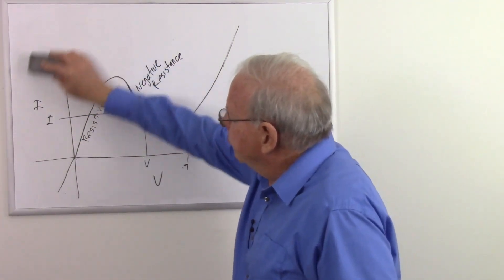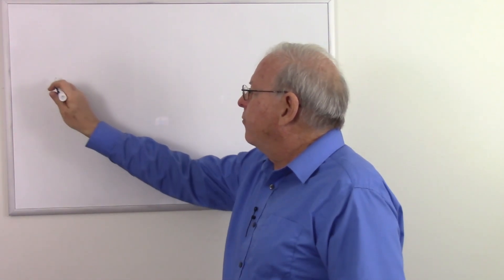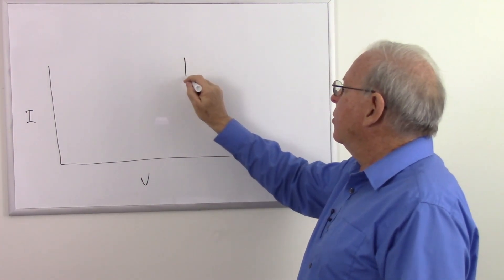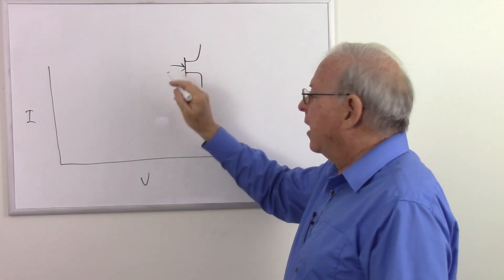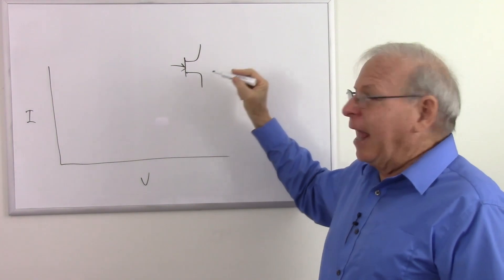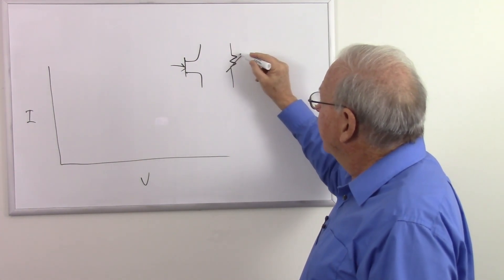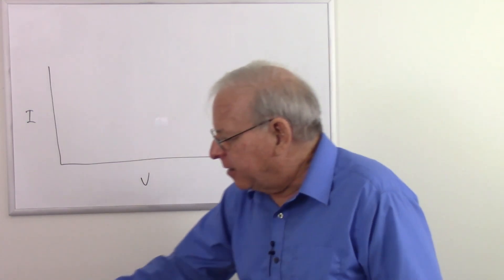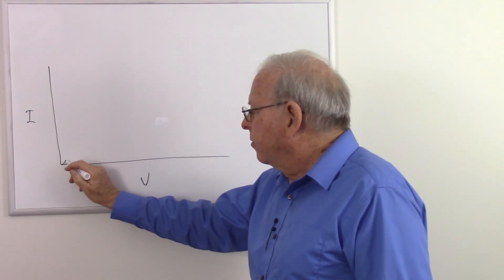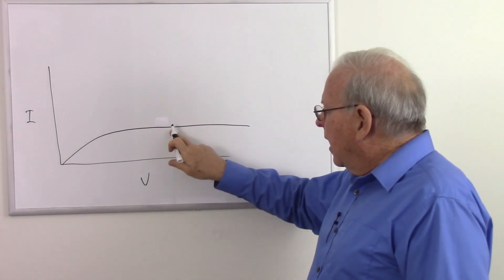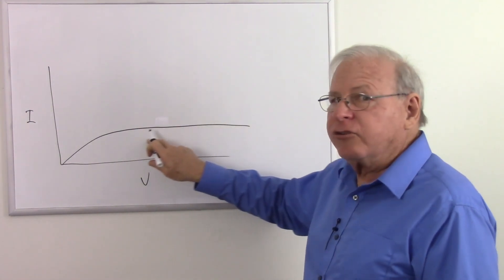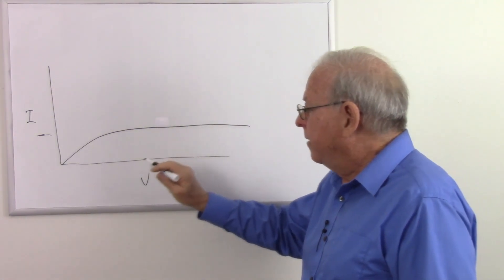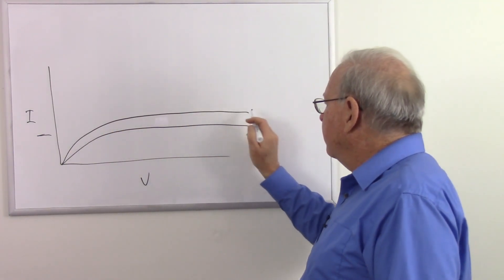Another example is the relationship between voltage and current in a field effect transistor, where we get another interesting curve. Basically, this device acts like a voltage-controlled variable resistance. If I change the voltage, I change this resistance. At one control voltage, I get a voltage and current curve that looks like that. Notice that I get a flat line here — that means my resistance is changing with voltage so that my current stays the same. So I have a region where it is essentially a voltage-controlled current source. And if I change that control voltage, I get another curve.